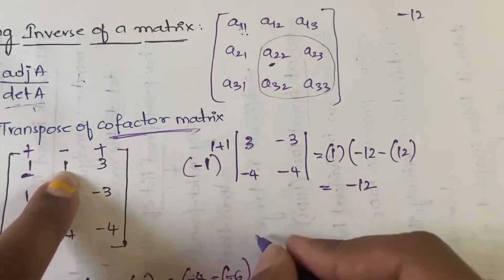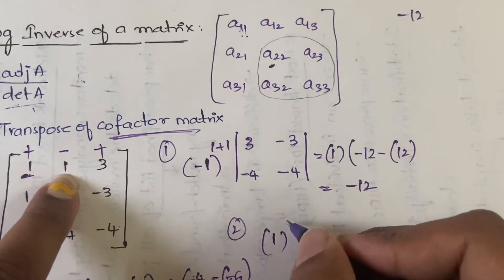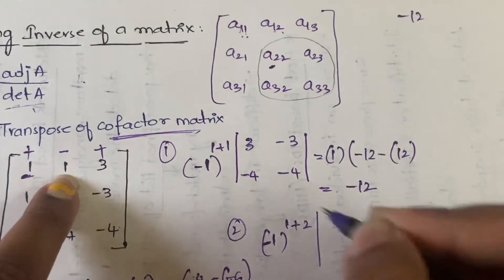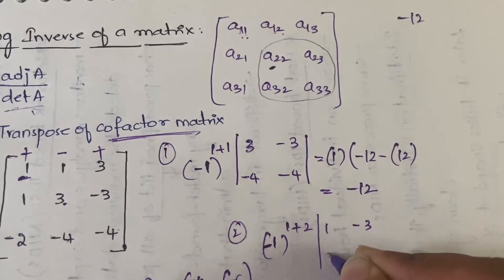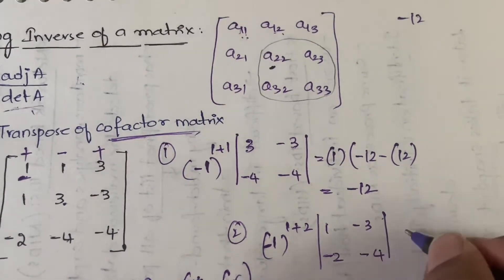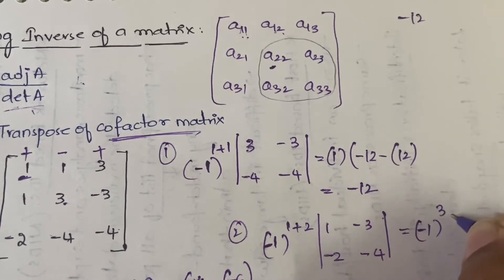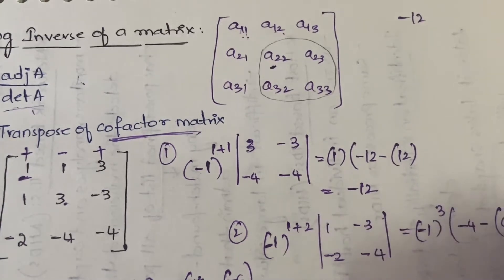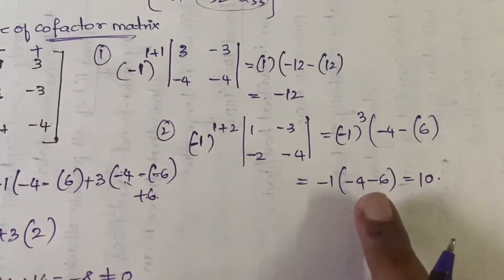The second cofactor element is at position (1,2): (−1)^(1+2) times the remaining 2×2 determinant from closing row 1 and column 2, giving elements 1, −3, −2, −4. That is (−1)³ × (1×(−4) − (−2×(−3))) = −1 × (−4 − 6) = −1 × (−10) = +10. So the second element is 10.